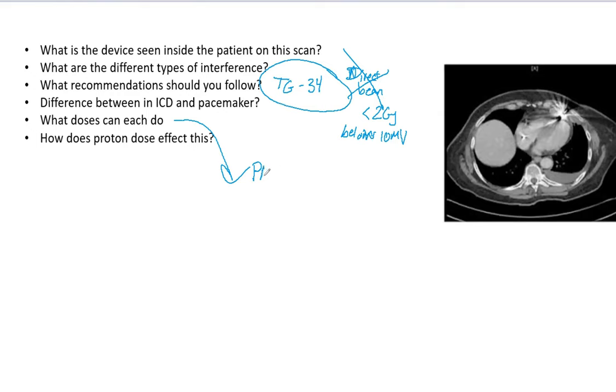So what doses can each one do? As I've already mentioned, pacemaker you want less than two gray and an ICD you actually want less than one gray. So we have a smaller tolerance for the ICD and you don't want any cumulative dose over five gray. Cumulative dose must be less than five gray for both.